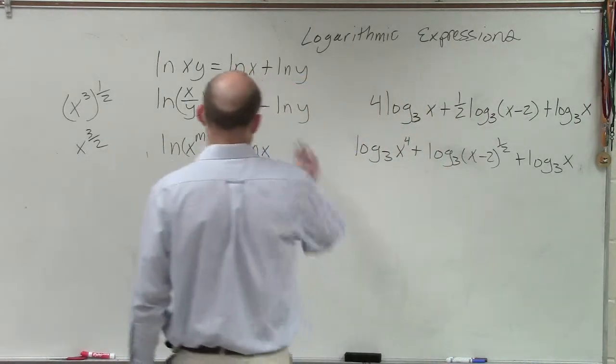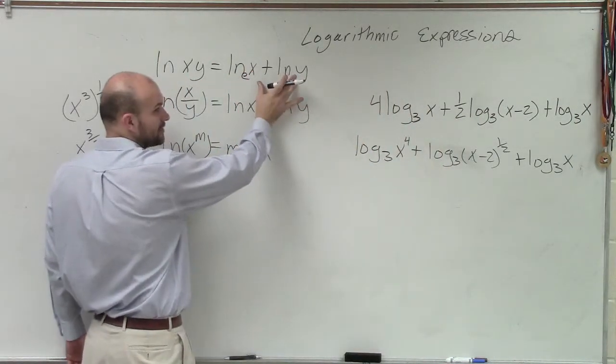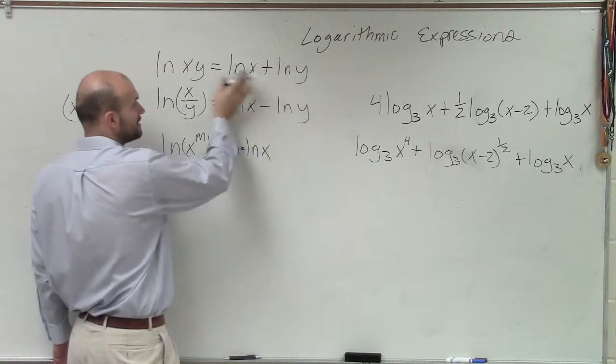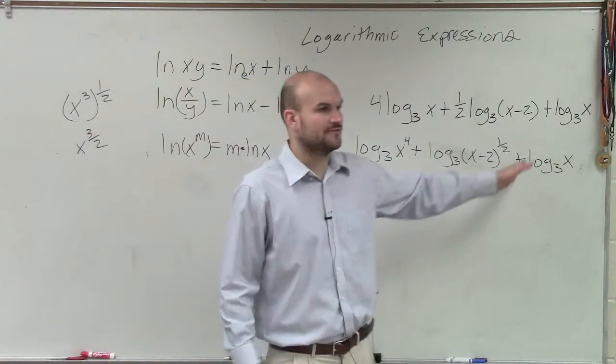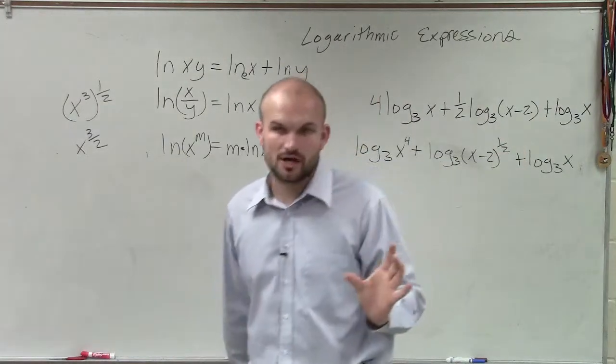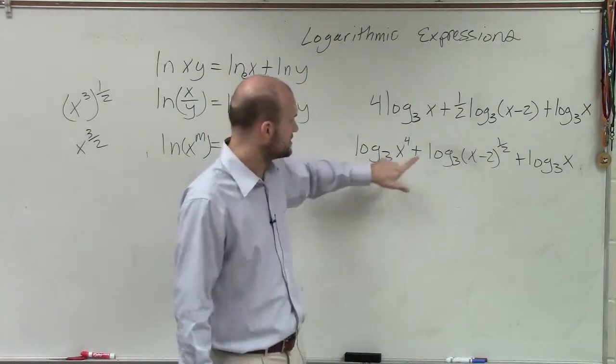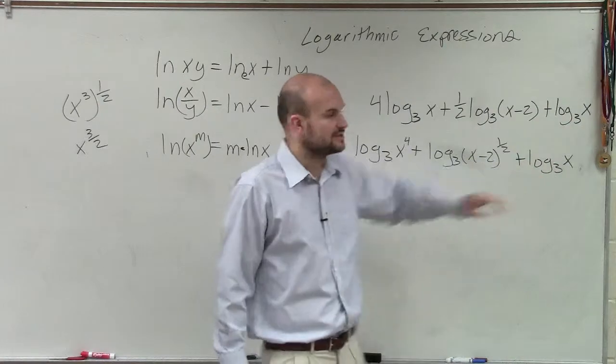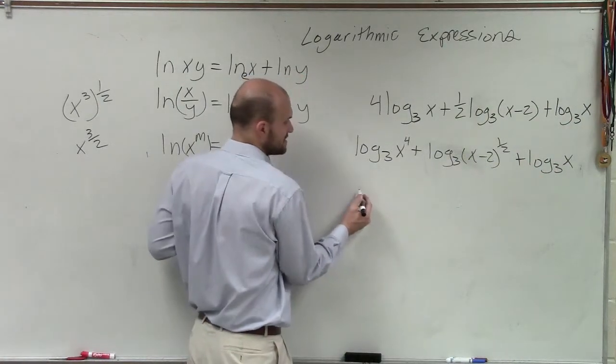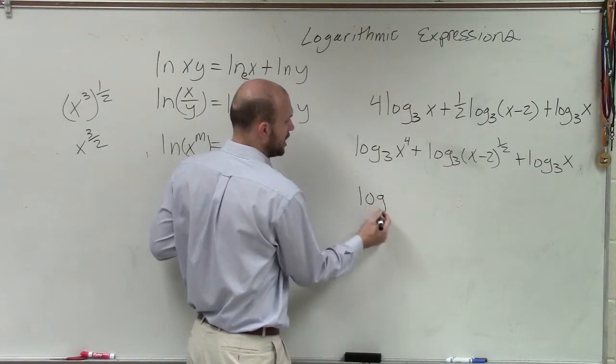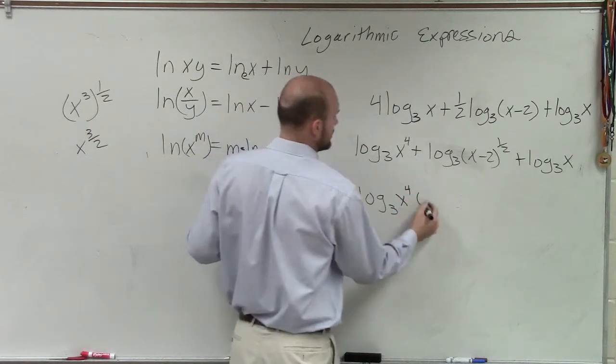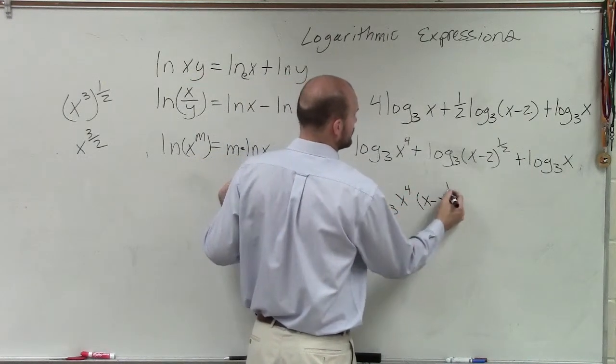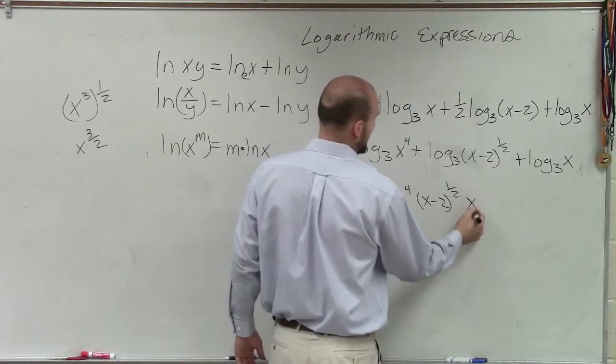Now I understand when I add two logarithms, I can rewrite that as a single logarithm. Well, if I'm adding three different logarithms, I can rewrite that as a single logarithm with the product of each of my terms. So therefore, rewriting this as a single logarithm, I'll have log base 3 of x to the fourth, x minus 2 to the 1 half, and x.